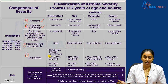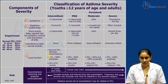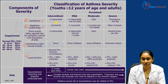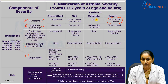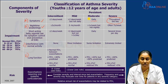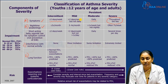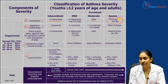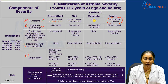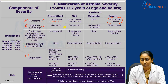How do we categorize based on symptoms? If the patient is symptomatic throughout the day, that is severe persistent. If symptoms occur daily but not throughout the day, that is moderate persistent. If symptoms occur twice or less than twice a week, that is intermittent. More than twice a week but not daily is mild persistent. So: all day = severe persistent; daily = moderate persistent; more than twice per week but less than daily = mild persistent; two or fewer times per week = intermittent.